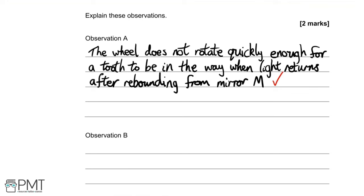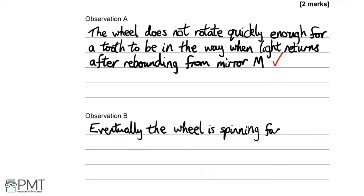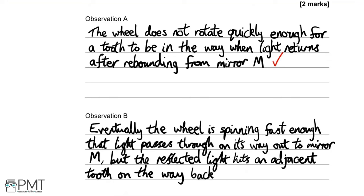For Observation B: when the wheel speed is slowly increased, at a certain speed the observer cannot see the light. The reason is that by the time the light returns from mirror M, the wheel has rotated enough so that a tooth is now in the way, blocking the returning light. That's the second mark. Both answers concern the state of the wheel when light returns from mirror M.